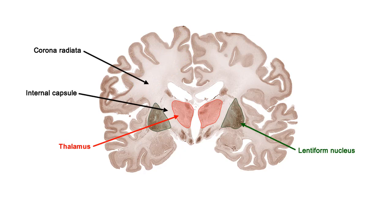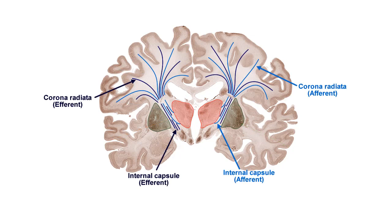The corona radiata and internal capsule are both made up of afferent and efferent projection fibers that carry information to and from the cerebral cortex. While it looks like just a mass of random fibers, it is actually highly organized, with very specific tracts projecting to or from selected cortical regions.